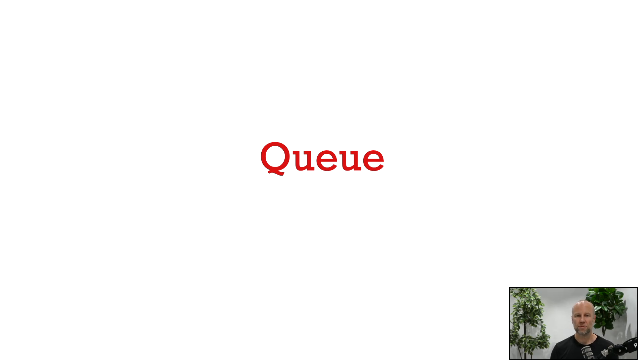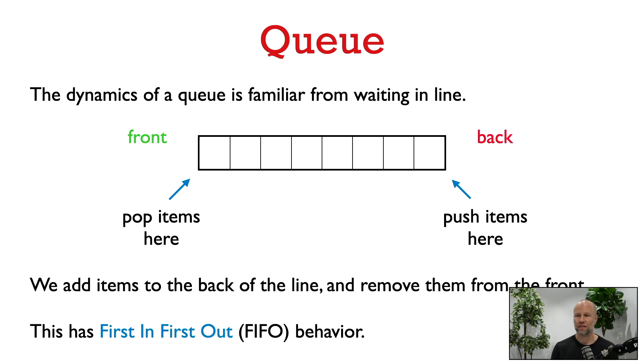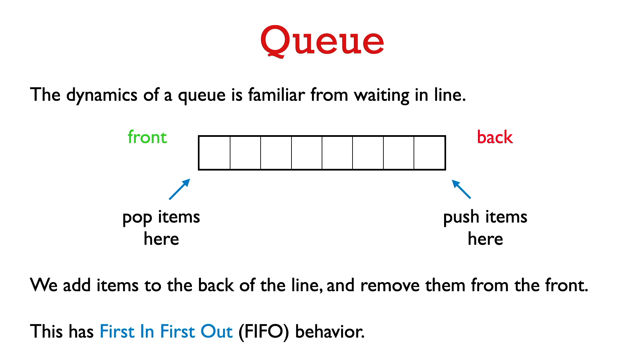In this video, we're going to look at an abstract data type called a queue and how we might implement a queue. A queue is familiar from waiting in line — we add items to the back of the line and remove items from the front. So a queue has first-in, first-out behavior. When we pop an item out of a queue, that's the item that's been in the queue the longest.